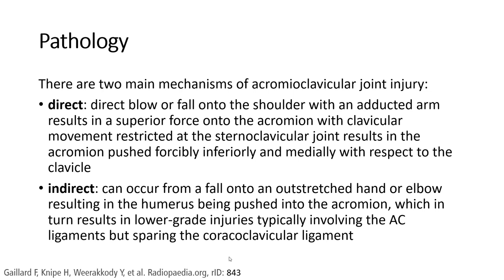There are two main mechanisms of acromioclavicular joint injury. Direct: a direct blow or fall onto an adducted arm results in superior force onto the acromion with clavicular movement restricted at the sternoclavicular joint, resulting in the acromion being pushed inferiorly and medially with respect to the clavicle.